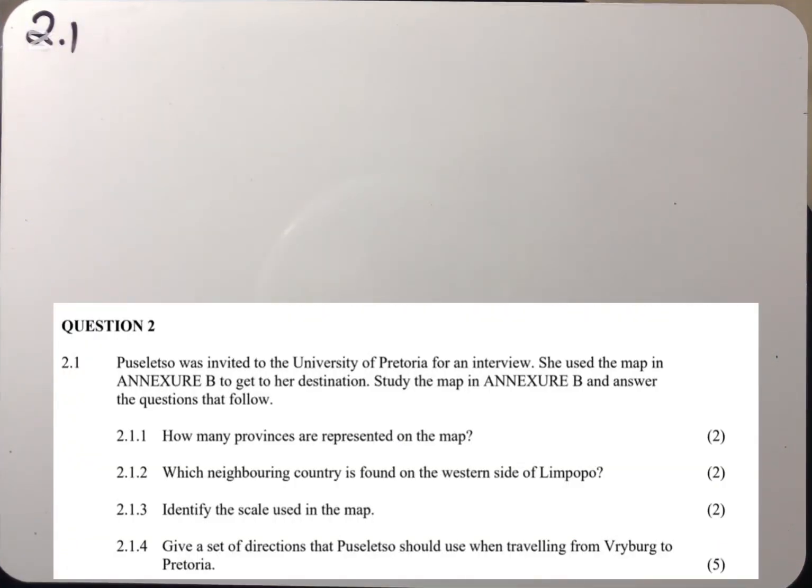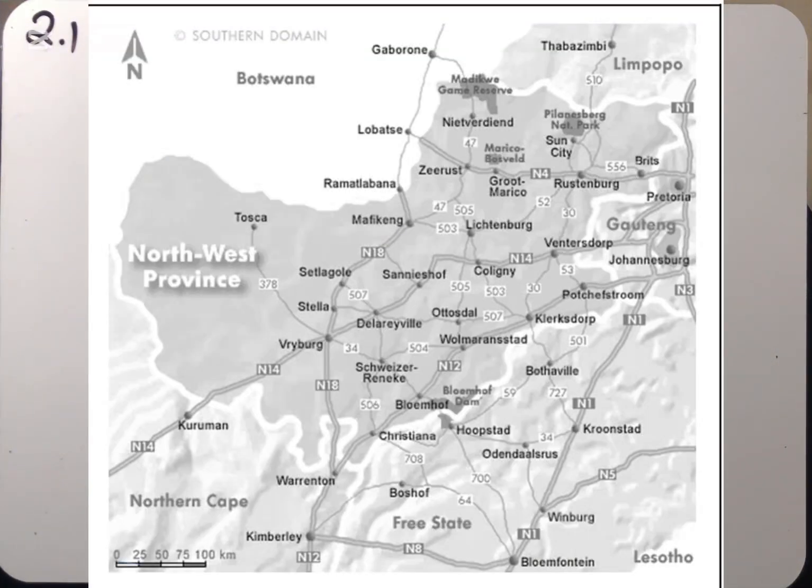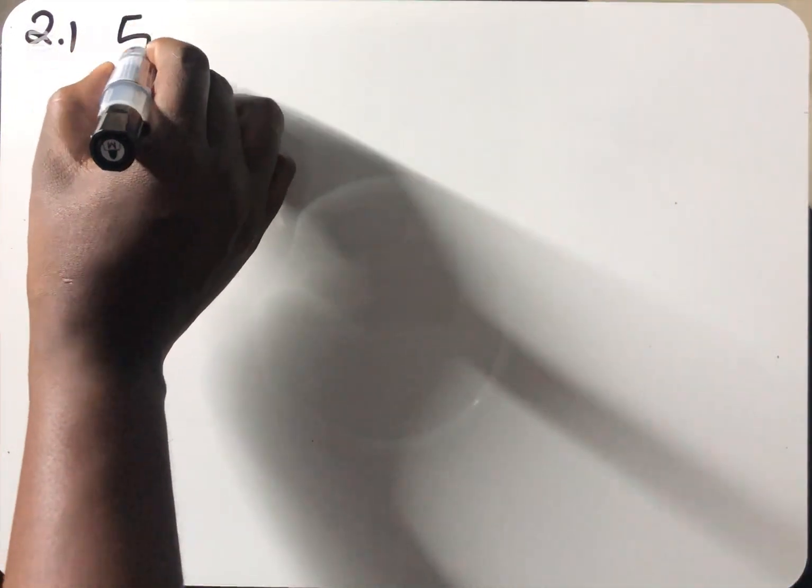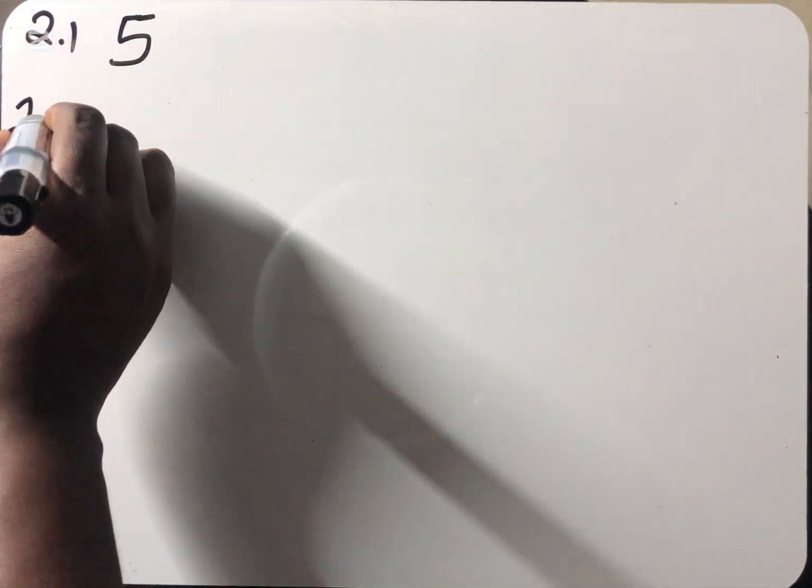So let's look at the first question. The first question says: How many provinces are represented on the map? When we look at this map we see Limpopo 1, Gauteng is also a province 2, Free State is also a province 3, Northern Cape 4, Northwest 5. So I see five provinces here. The answer is going to be five.